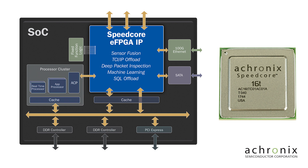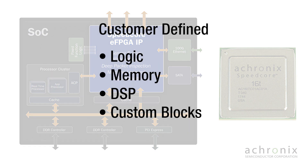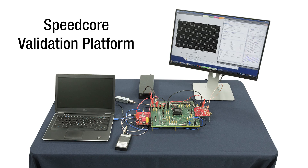SpeedCore is a high-performance, fully permutable architecture allowing customers to define the amount of logic, memory, DSP, and their own custom blocks to fit their application requirements. Today we will demonstrate a validation platform for the Acronix SpeedCore embedded FPGA IP technology.